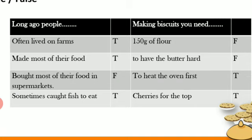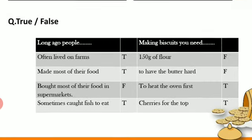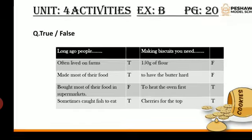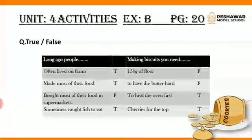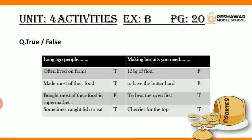Making biscuits you need 150 grams of flour — false. Making biscuits you need to have the butter hard — false. To heat the oven first — true. Cherries for the top — true. These are the true/false questions which you have to do after reading the unit. It's very easy.